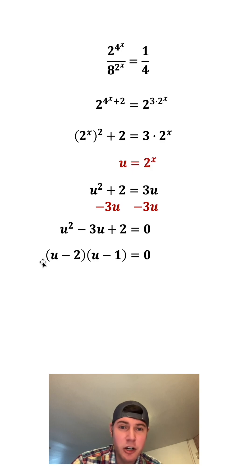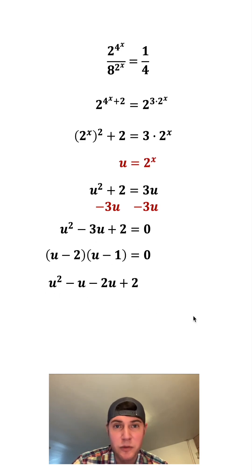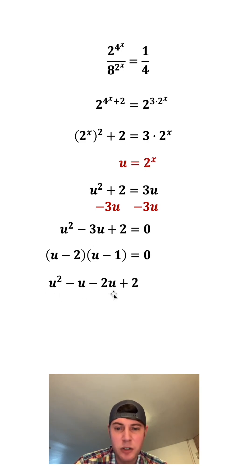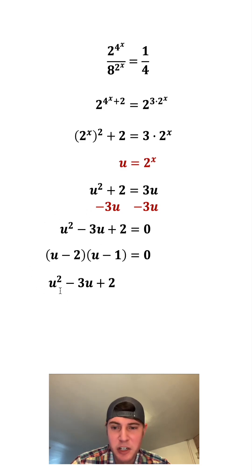And if you're curious what we just did — if we were to foil this out, u times u is u squared, u times negative 1 is negative u, and so on, we would have these four terms. The negative u and negative 2u combine to give us negative 3u, and that brings us back to what we had. So we just rewrote this in terms of factors.